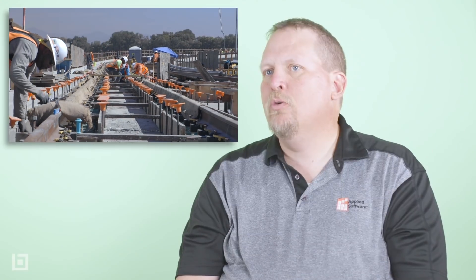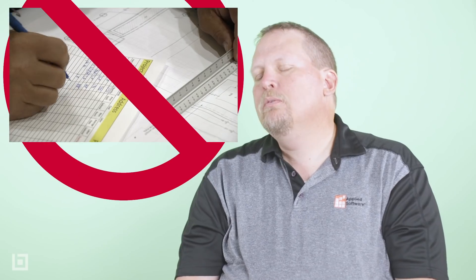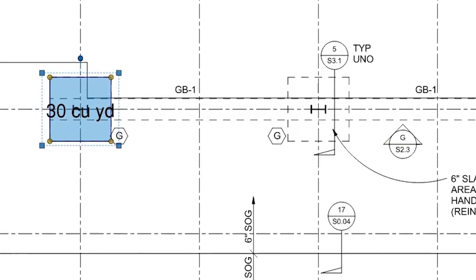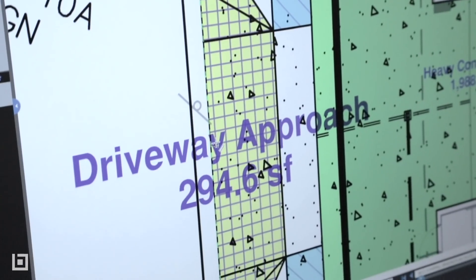My manager doesn't know CAD. What do I do? I give him a piece of paper and he marks it up with a pen. Use Review — have him use the markups. And then when I get the comments back from him, I can actually read what he wrote and I don't have to decipher his handwriting.